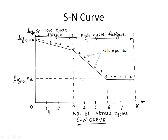This number indicates the number of stress cycles in the power of 10. The failure of a component which occurs up to 10 to the power 3 number of stress cycles is known as low cycle fatigue failure. When the failure takes place between 10 to the power 3 and 10 to the power 8 number of stress cycles, then such failure is called high cycle fatigue failure.